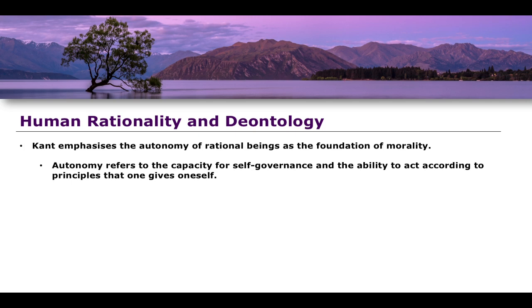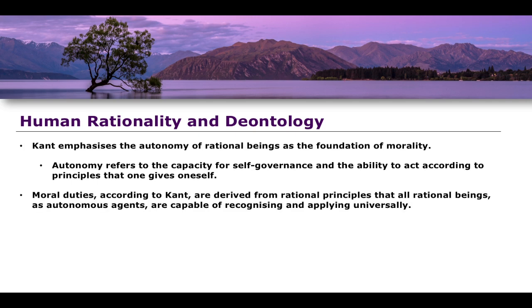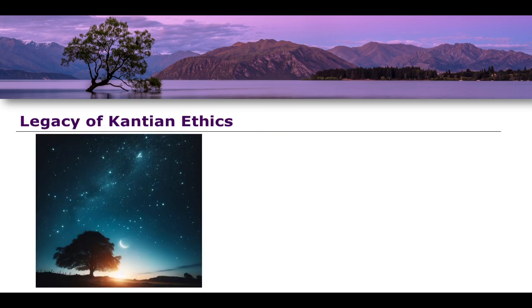If I were to apply my own ethical principles and standards, I am autonomous in the sense that I am able to first create these principles for myself, but also autonomous in the sense that I am able to act according to those principles free of any external constraints. Moral duties, on the other hand, according to Kant, are derived from rational principles that all rational beings — such as autonomous agents — are capable of both recognizing and applying from a universal perspective.